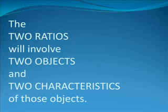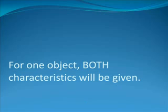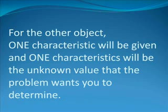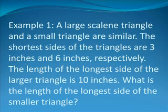The two ratios will involve two objects and two characteristics of those objects. For one object, both characteristics will be given. For the other object, one characteristic will be given and one will need to be found.